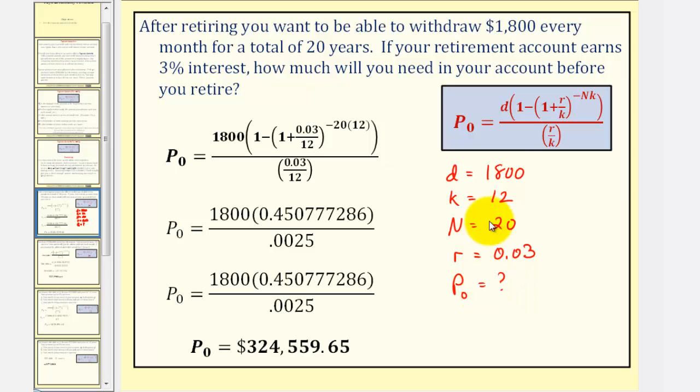Now I'll perform substitution into the formula and find P sub zero. D is equal to 1,800, K is equal to 12, N is equal to 20, and R is equal to 0.03.